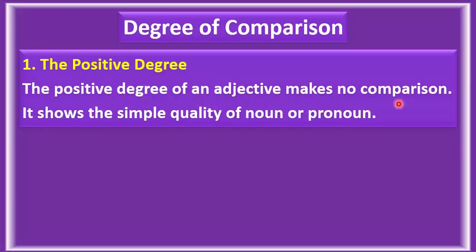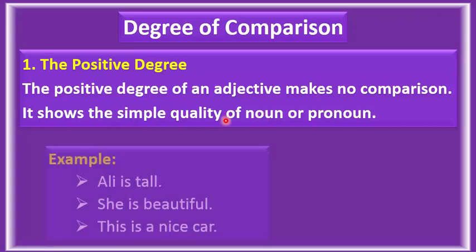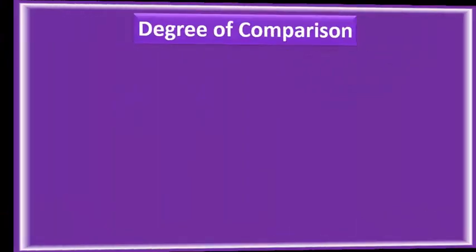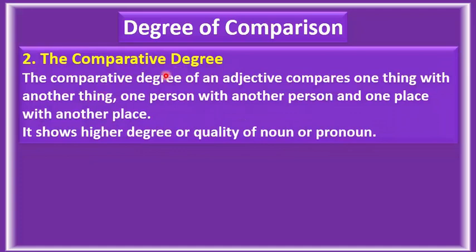Number one — the positive degree. The positive degree of an adjective makes no comparison. It shows the simple quality of a noun or pronoun. In positive degree there is no comparison; it only describes the quality of a noun or pronoun. For example: Ali is tall. She is beautiful. This is a nice car. There is no comparison in these sentences.